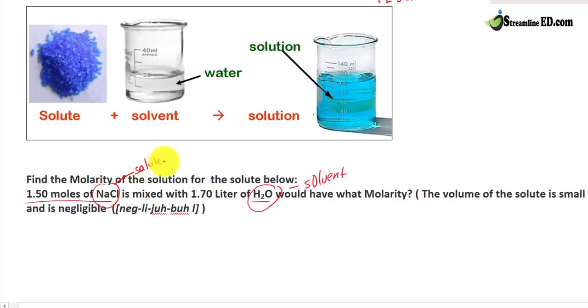As you read this problem, you have to know what's happening in the situation. We know that salt is going to dissolve in water. So right away, we know that salt is your solute, instead of water. And then, we're going to make this assumption: the volume of the solute is so small, and therefore, it is negligible. That means you can ignore it. So let's do the math.